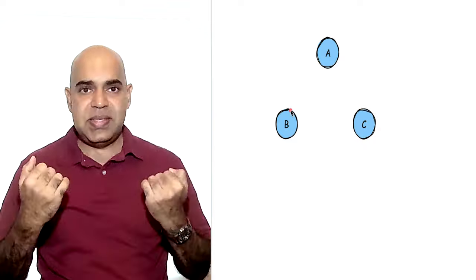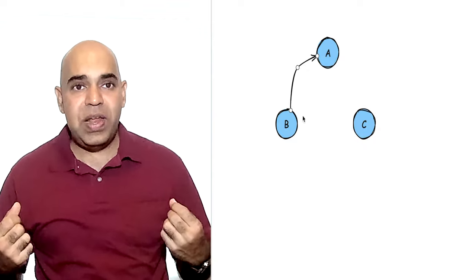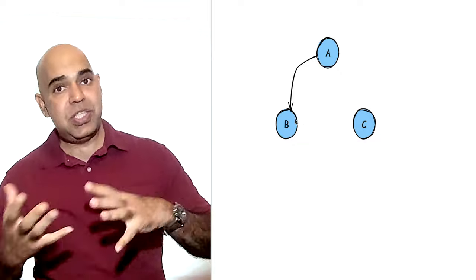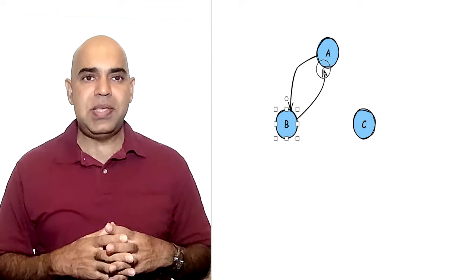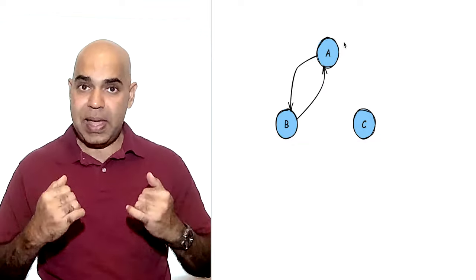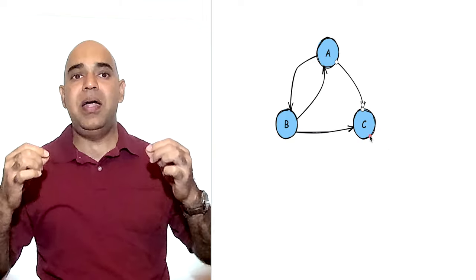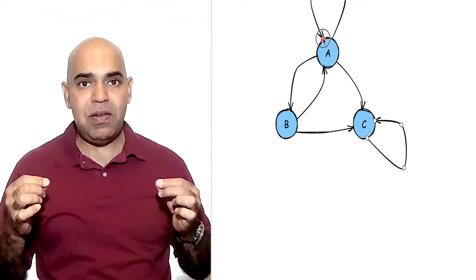In the context of the page rank algorithm, the spider trap issue presents a significant problem. We know that the page rank algorithm works by spreading page rank or importance values from each website to outbound websites. Each website receives its importance values via inbound hyperlinks. A spider trap is a website that has incoming links, but its outgoing links are directed toward itself only.